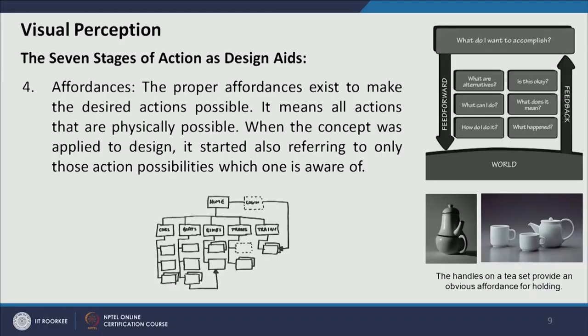Affordance: does the proper affordance exist to make the desired action possible? It means all actions that are physically possible — all options open to go toward the goal. In design, the concept also refers to only those actions we are aware of. All the possible paths going toward a goal are affordance; but in terms of design, the commonly acceptable paths are affordance. For example, in an information architecture: you reach the home page, there are five tabs, and under each tab you can go to different pages via drop-downs.